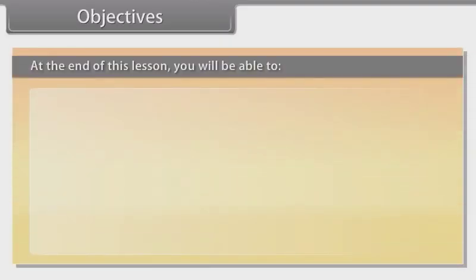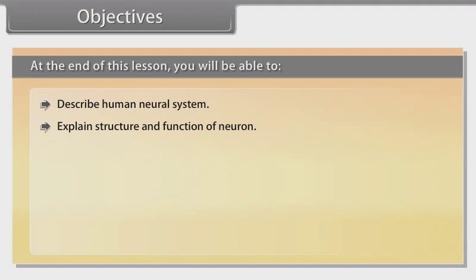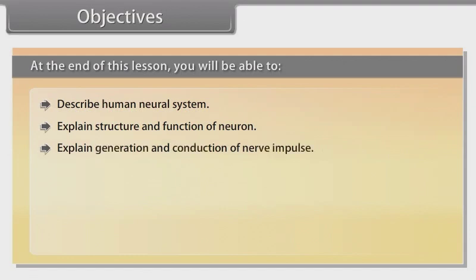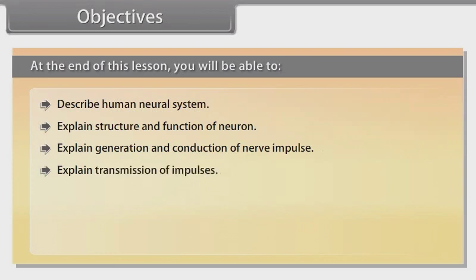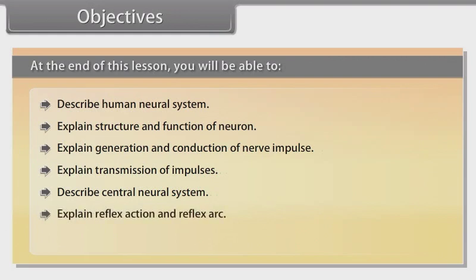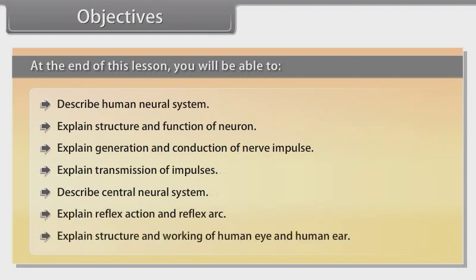At the end of this lesson, you will be able to: describe the human neural system, explain the structure and functions of a neuron, explain generation and conduction of nerve impulse, explain transmission of impulses, describe the central neural system, explain reflex action and reflex arc, and explain the structure and working of the human eye and human ear.